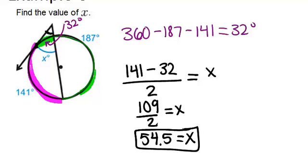So keep in mind, we had to use that 187 in order to figure out that missing arc, but otherwise the 187 didn't show up in this equation right here in order to find x.